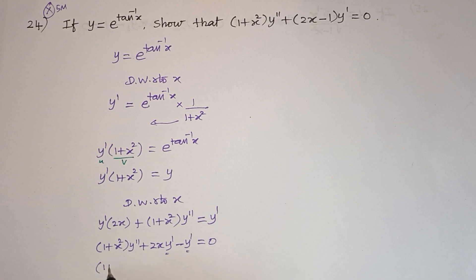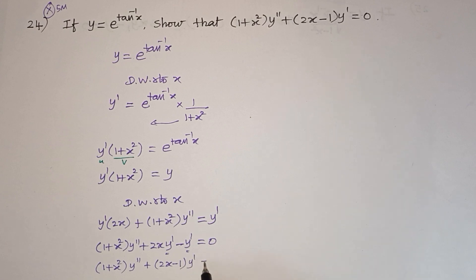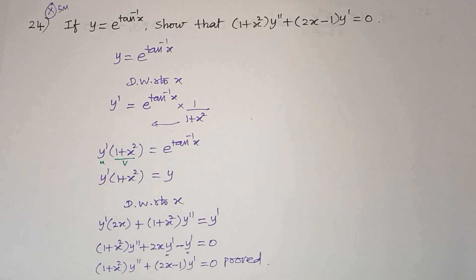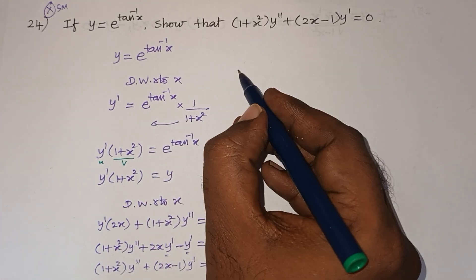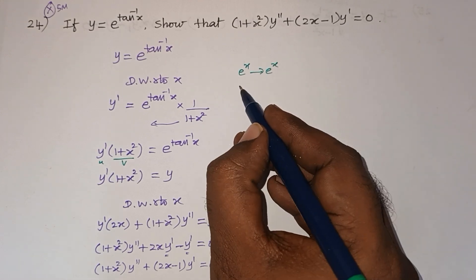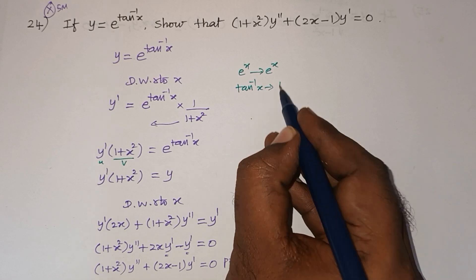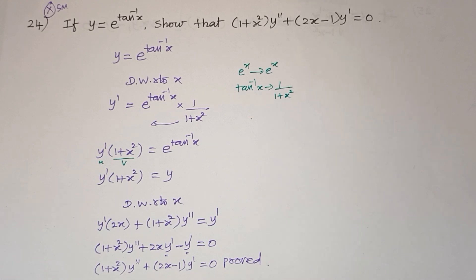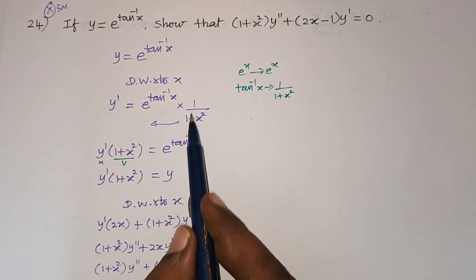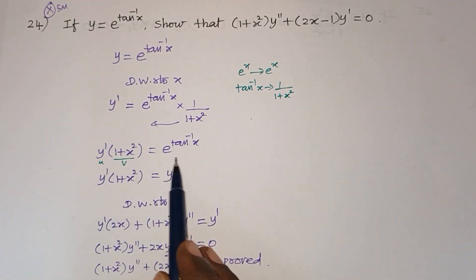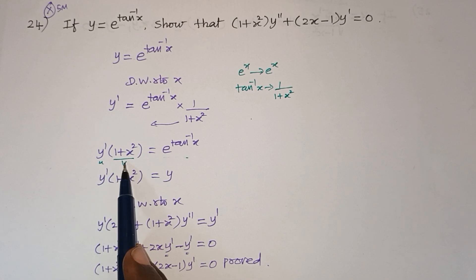Arranging: (1 + x²) y'' + (2x - 1) y' = 0. That is the required proof. It is a very easy but very important sum. First, e to the power tan inverse x differentiation: e to the power x differentiates as e to the power x, then tan inverse x differentiates as 1 by (1 + x²). Cross multiply, then differentiate again using the product rule.